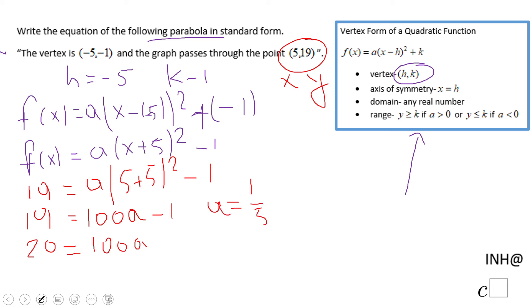So now we can write the equation. The final equation will be f(x) = 1/5 times (x + 5) squared minus 1. That's it for this problem.